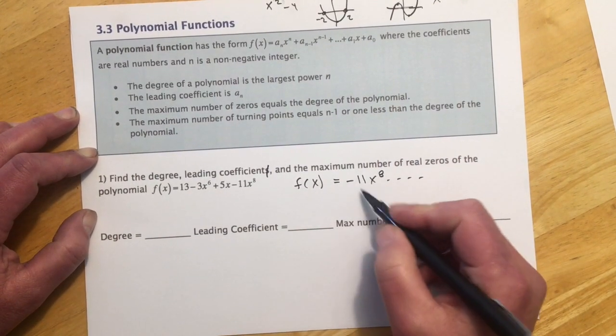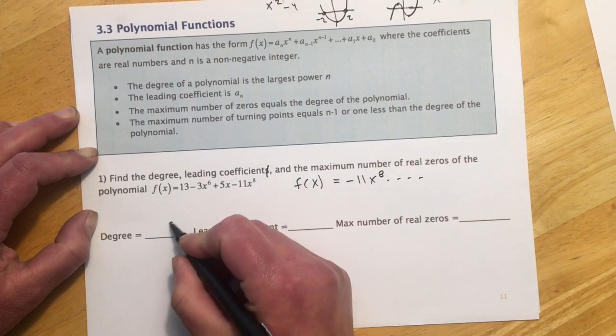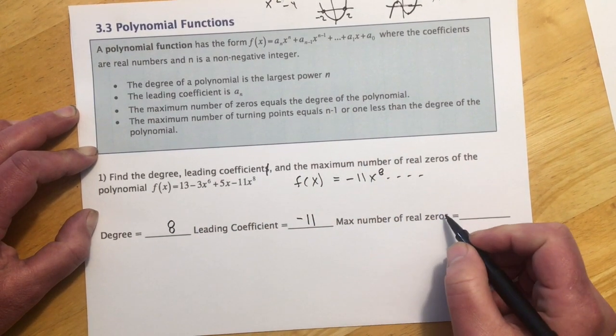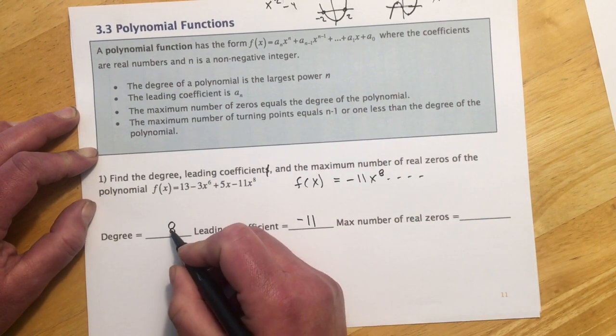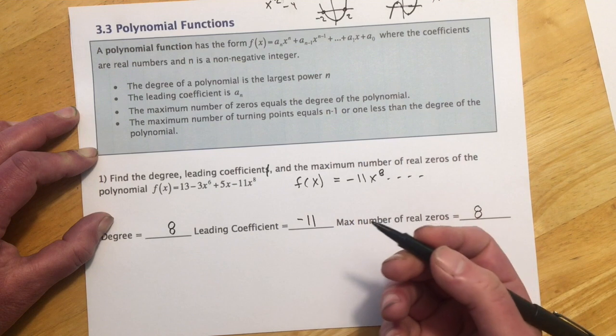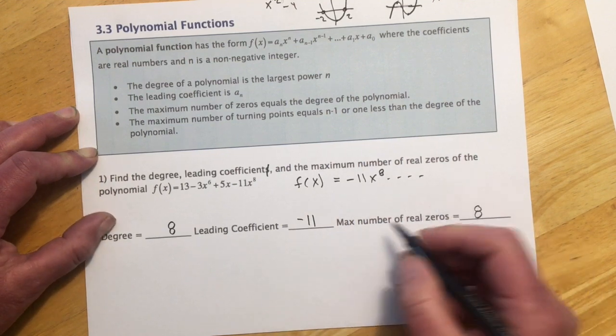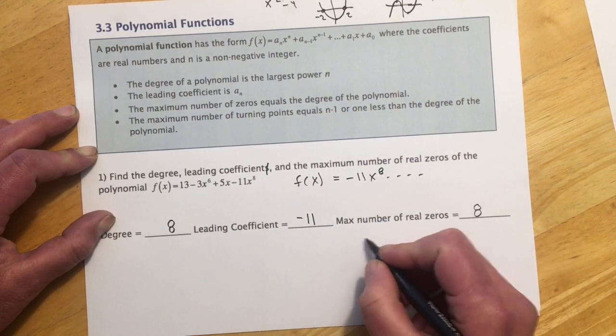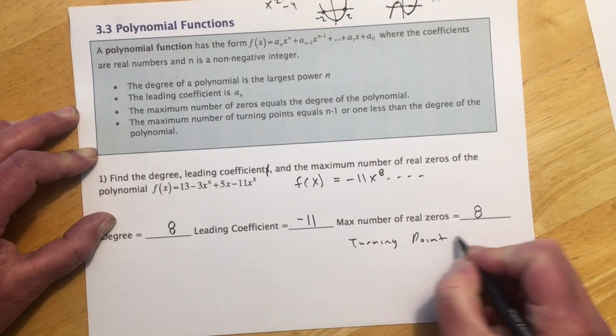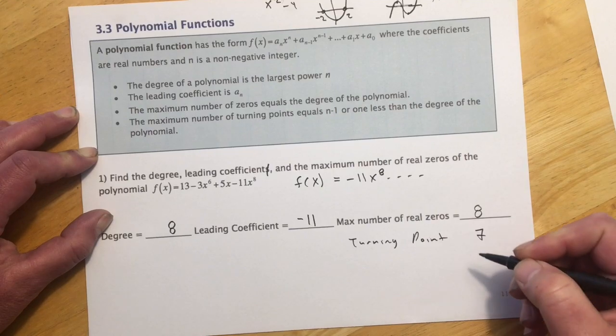So this is the term that gives me all this information. So my degree would be 8, my leading coefficient is negative 11, and my maximum number of zeros matches the degree, so that would be 8. If the question had asked for the maximum number of turning points, turning points would be 7, because it would be 1 less than the degree.